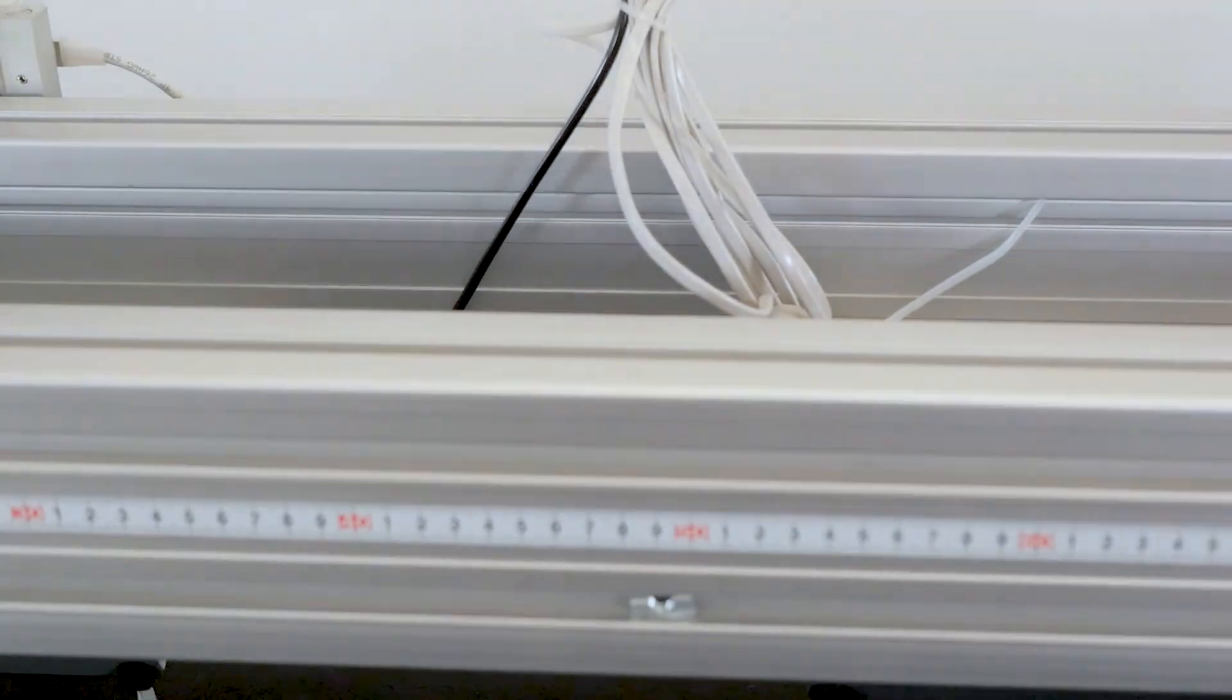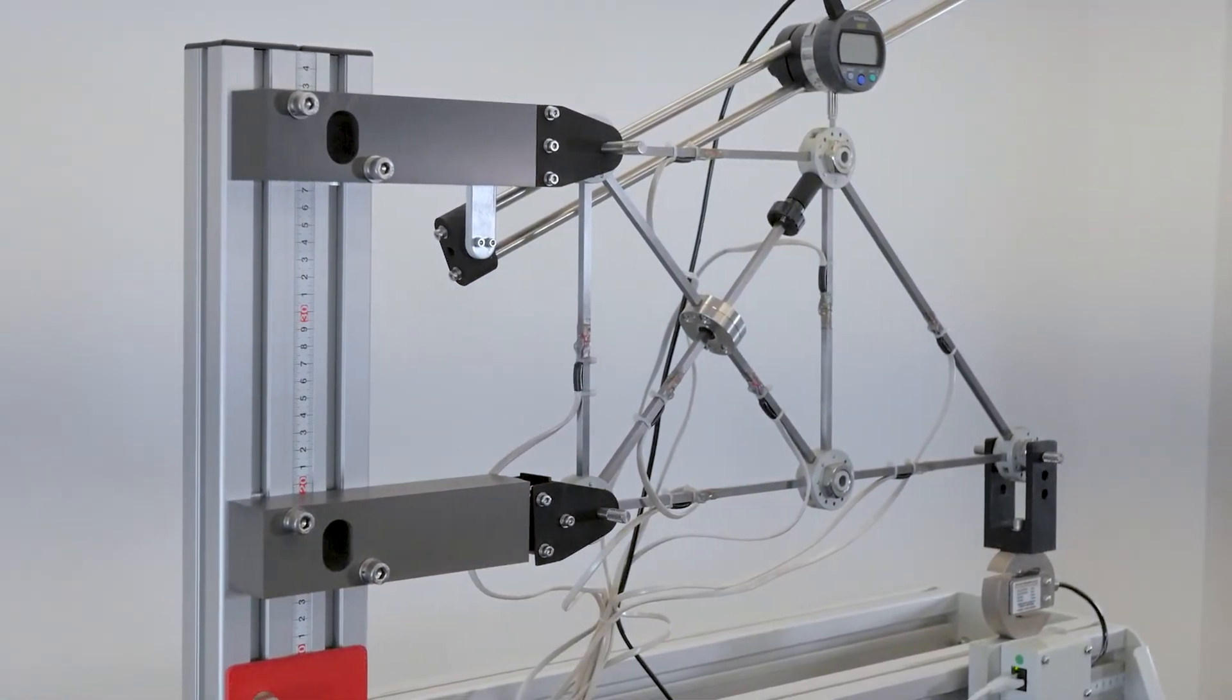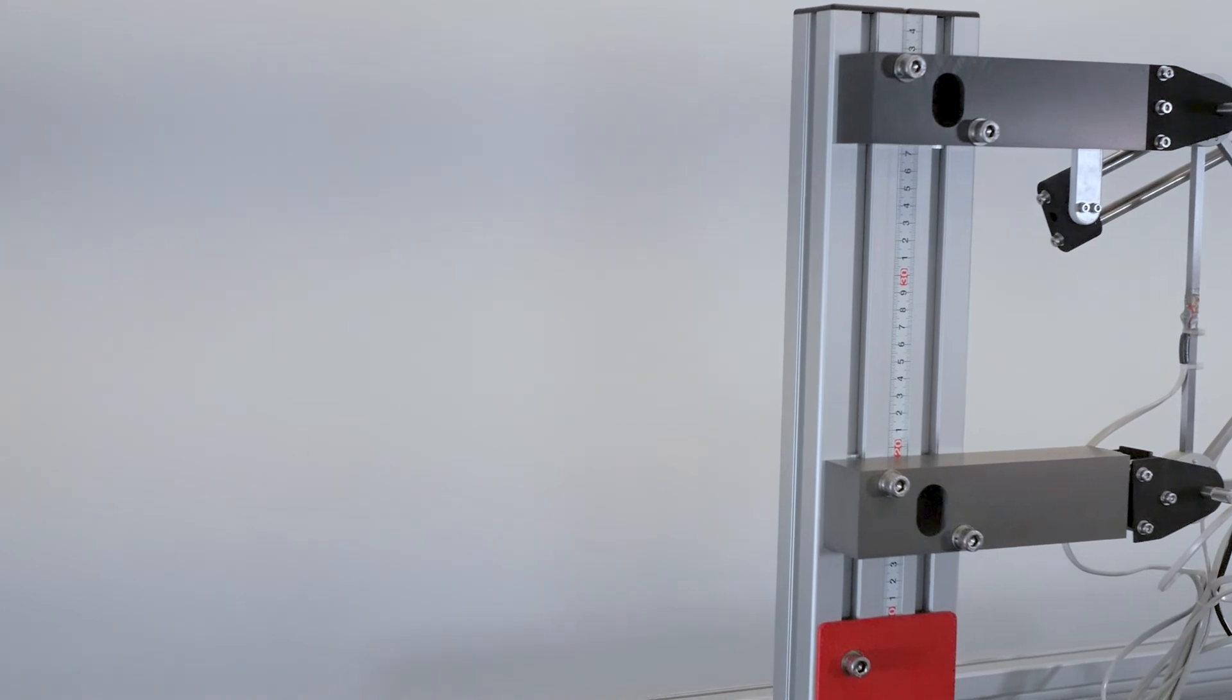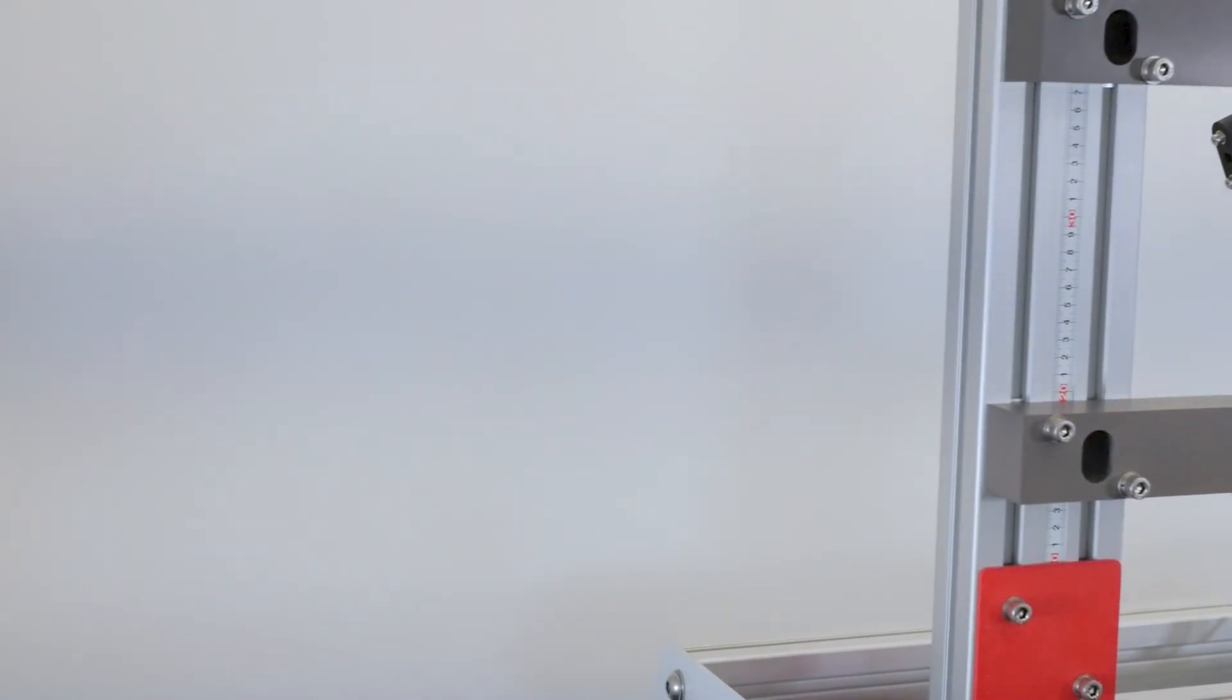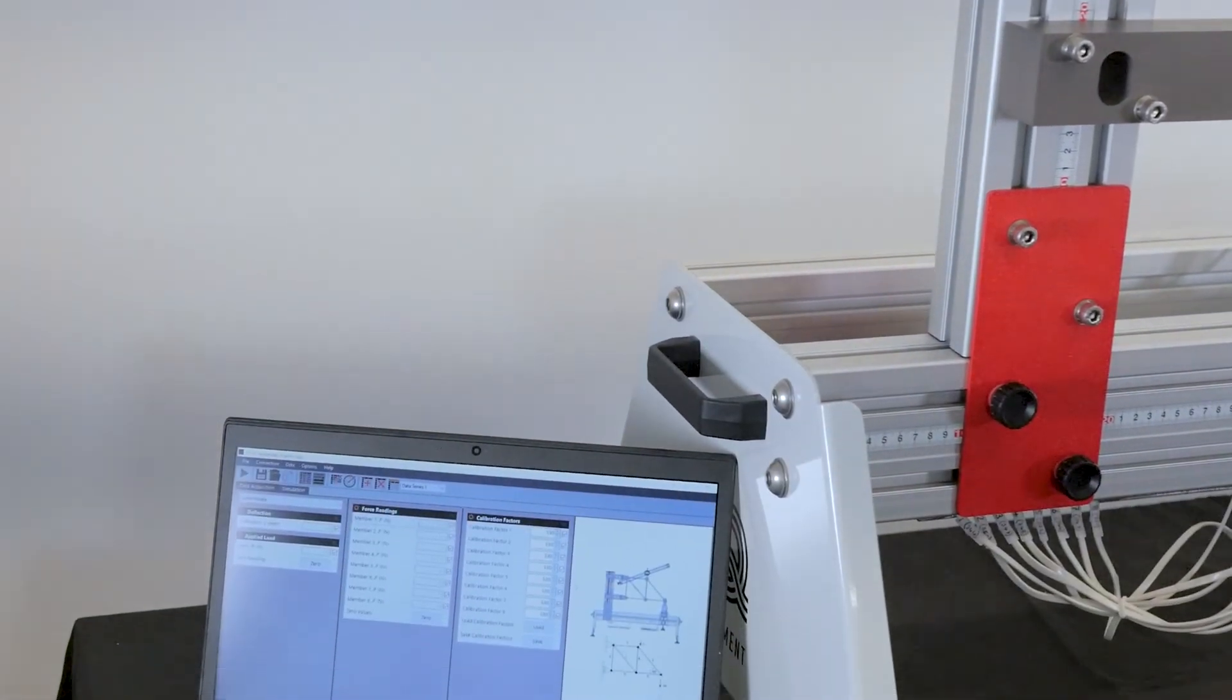This is one of 21 experiments within the new generation structures range from Techquipment. For more information on the curved bars and davits experiment and other experiments within the range, click on the links below.